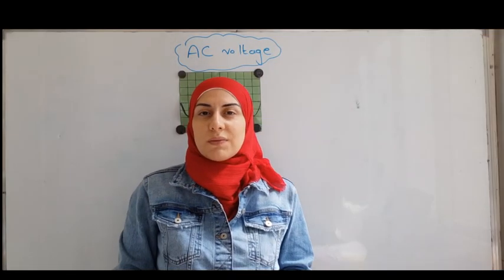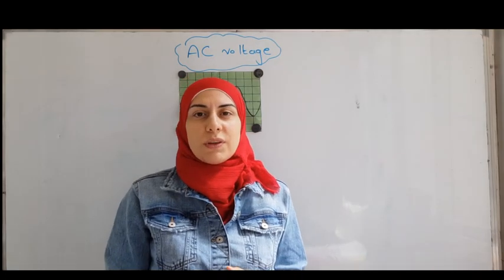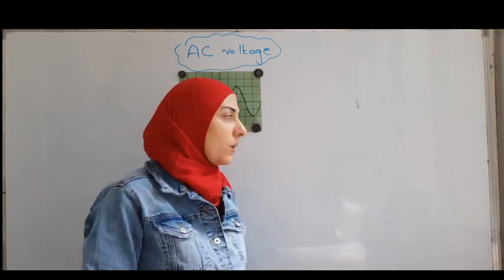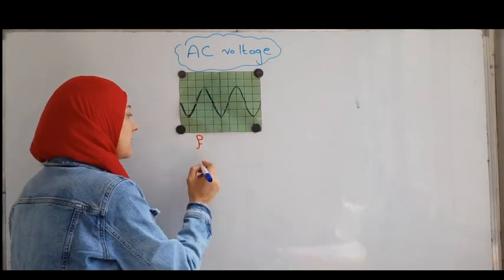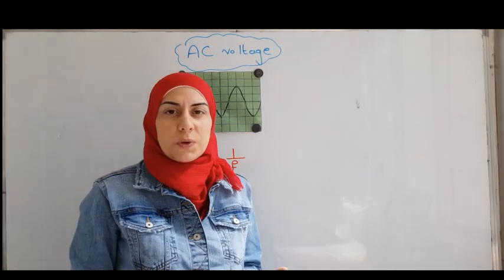Sometimes you are given an exercise in different order. So you don't get U maximum then U effective and period then the frequency. You get them in a reverse order. So sometimes you are given F. So how do we get the period? Then T equals 1 over F.